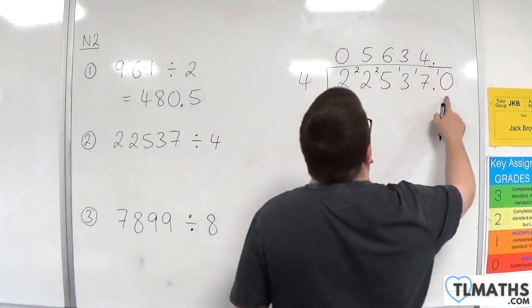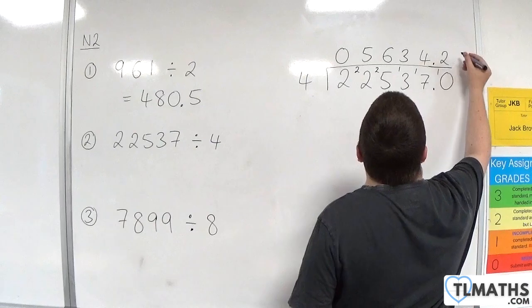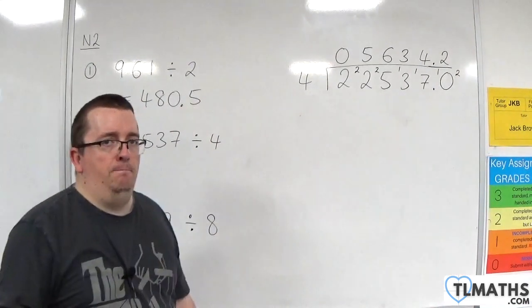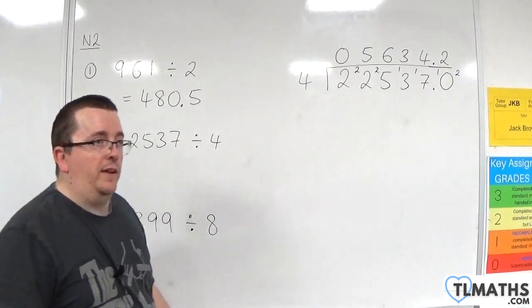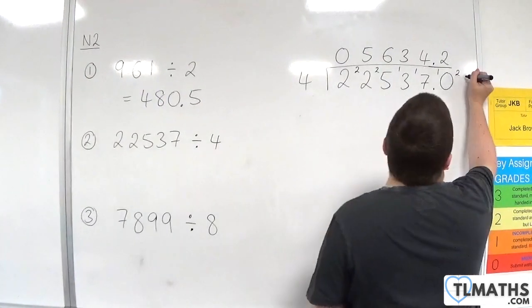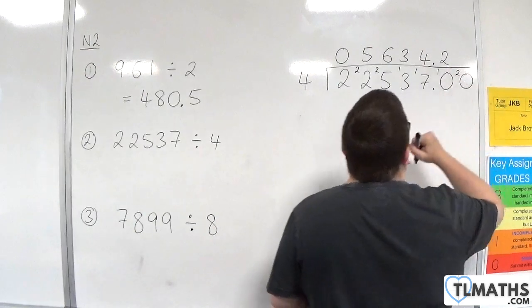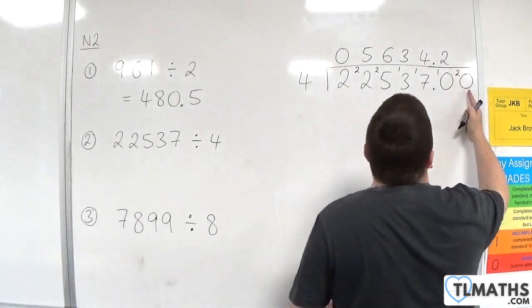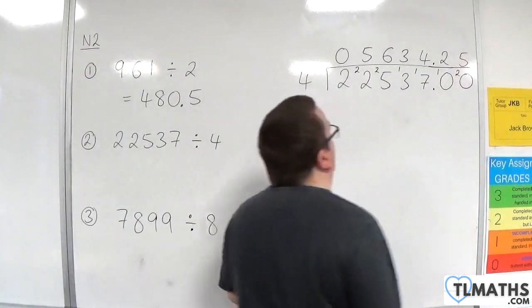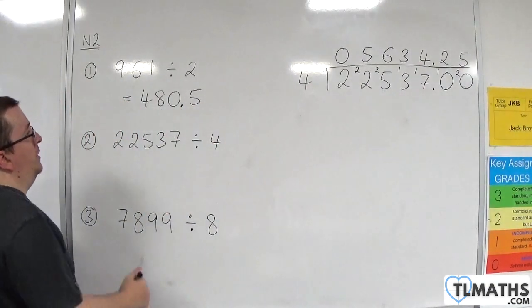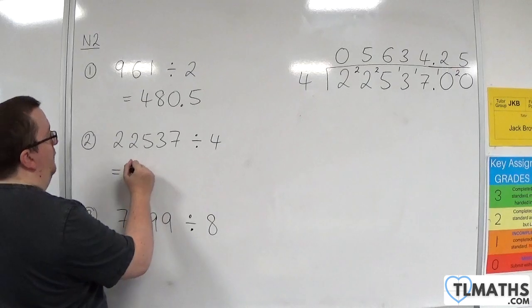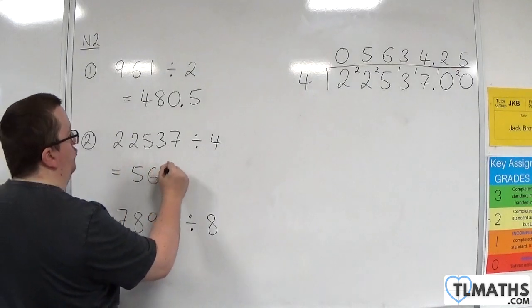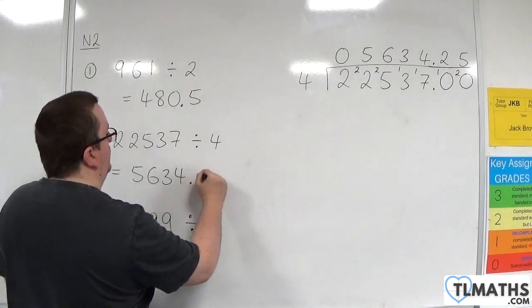4's into 10 go 2 with 2 left over. Now, it doesn't make any sense to put in another decimal point, so we just put in another 0 and we keep going. 4's into 20 go 5, and then we stop because it's gone in cleanly. No remainder. So we have 5,634.25.